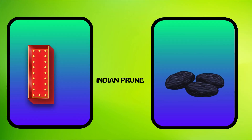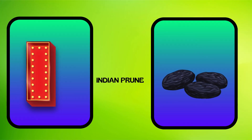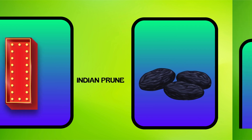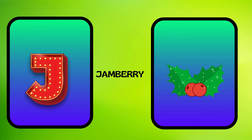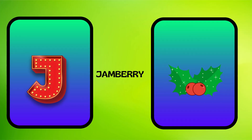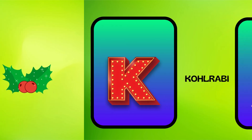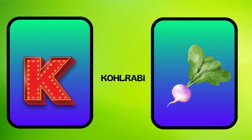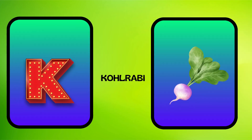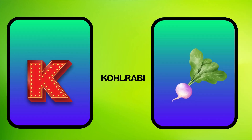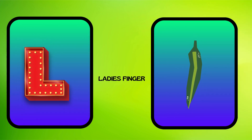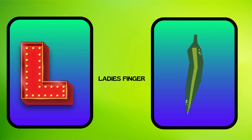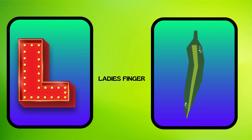I is for Indian prune, eh, Indian prune. J is for jamberry, juh, jamberry. K is for kohlrabi, kuh, kohlrabi. L is for lady's finger, luh, lady's finger.